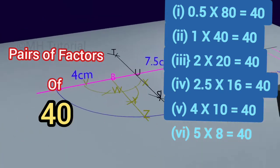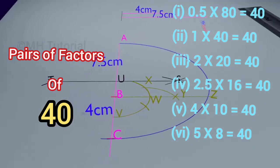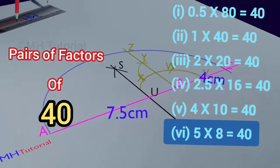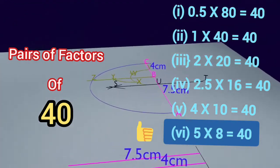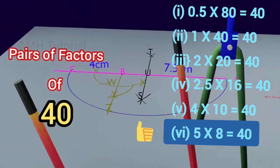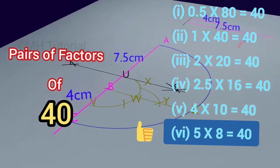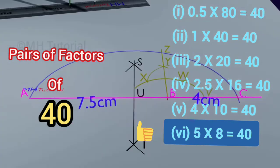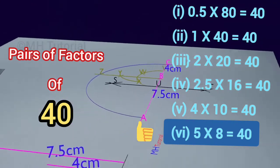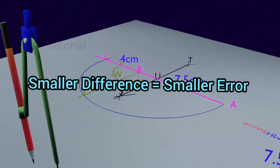If you want to minimize the error, it would be wise to choose the pair of factors standing at the last in the list, namely 5 and 8, because neither 8 is very larger than 5 nor 5 is very smaller than 8. The difference between these two numbers is 3, and a smaller difference produces a smaller error.